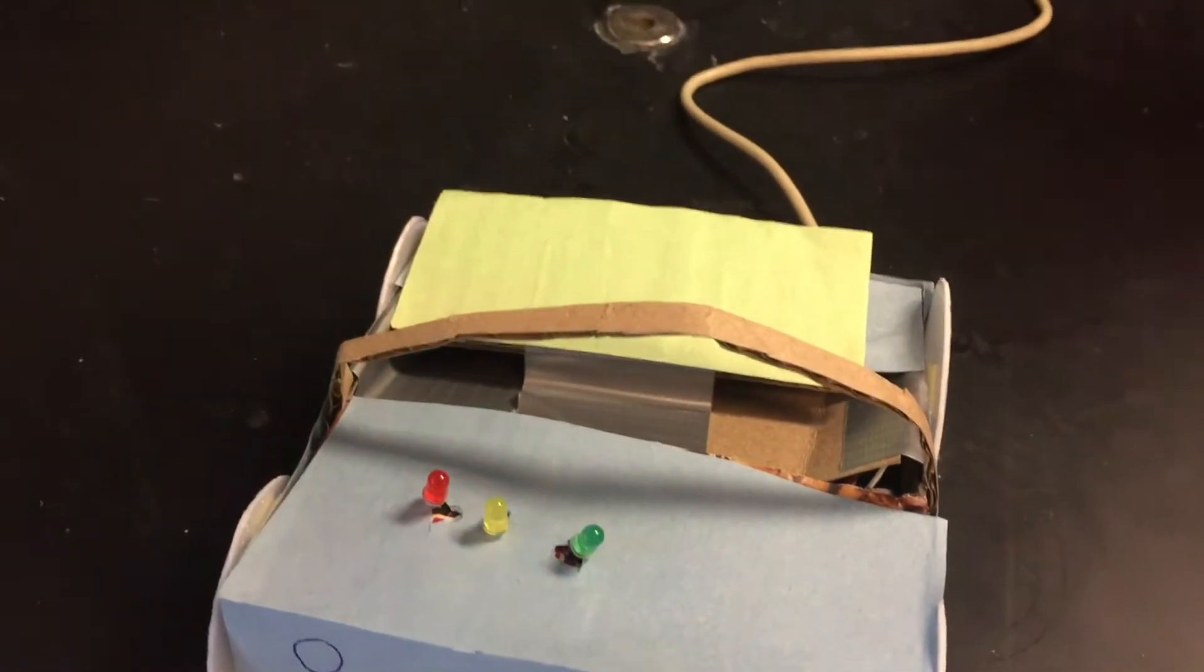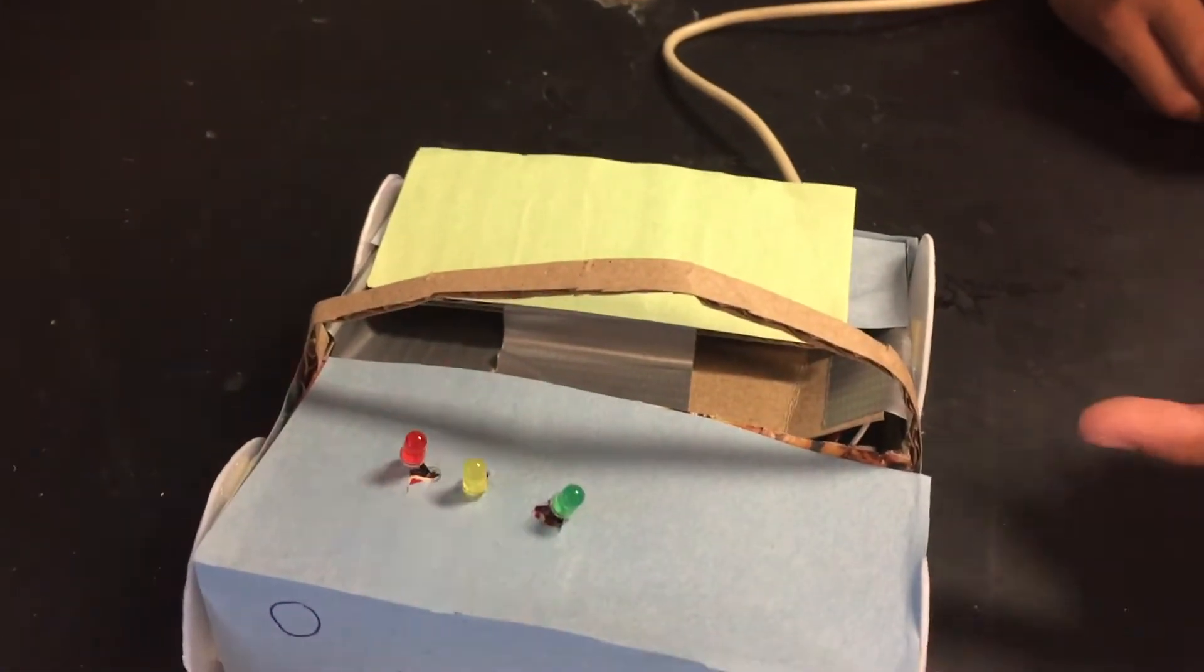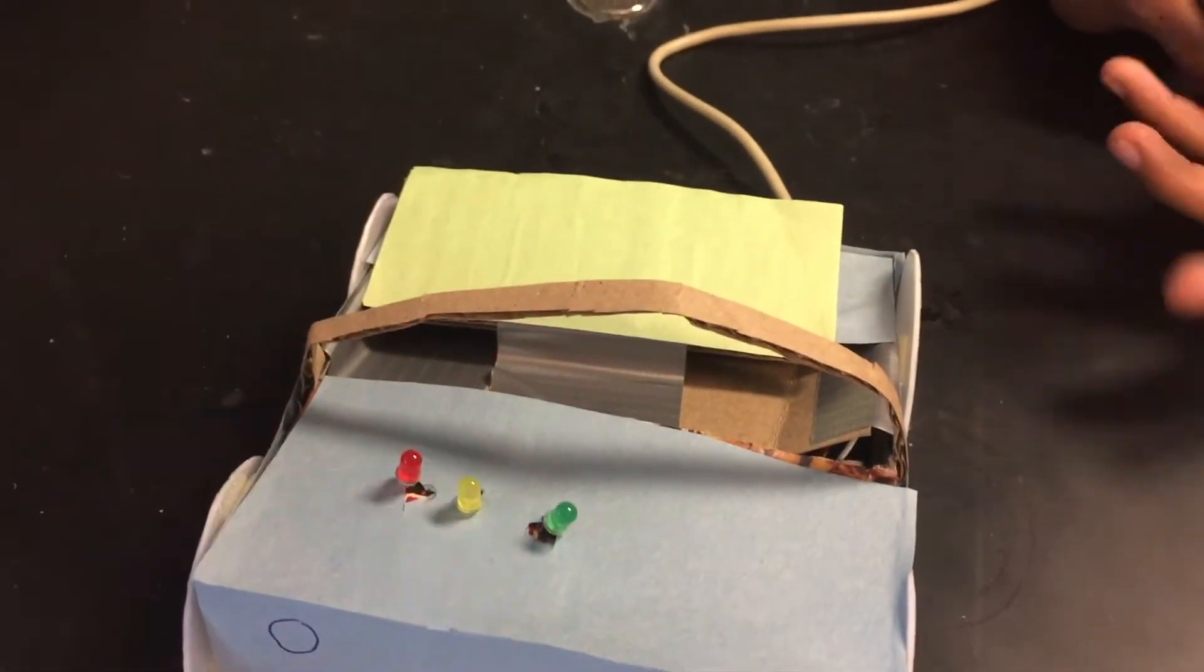We cut this out of a granola bar box. We cut a little slit to put our Arduino stuff, and then we glued blue paper over the box so it looks kind of like a blue car.